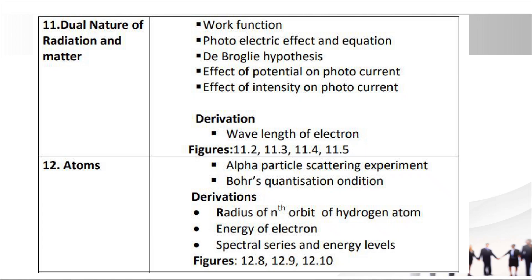Chapter 12: Atoms. Topics: alpha particle scattering experiment, Bohr's quantization condition. Important derivations: radius of the nth orbit of hydrogen atom, energy of electron, spectral series and energy level. Important figures: 12.8, 12.9, and 12.10.